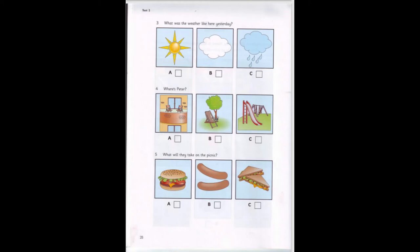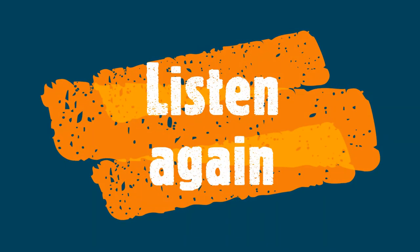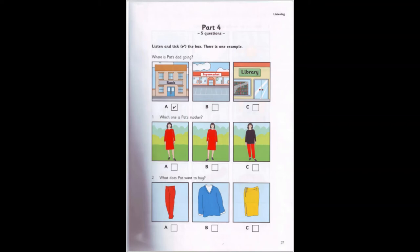Now listen to Part 4 again. Look at the pictures. Listen and look. There is one example. Where is Pat's dad going? Is that your father walking to the bus stop, Pat? Yes, it is, Sam. Where's he going? He's going to town for mum. Is he going to the supermarket? No, I went there yesterday. And mum's going to the library this afternoon. Oh, I know. He's going to the bank. Can you see the tick? Now you listen and tick the box.